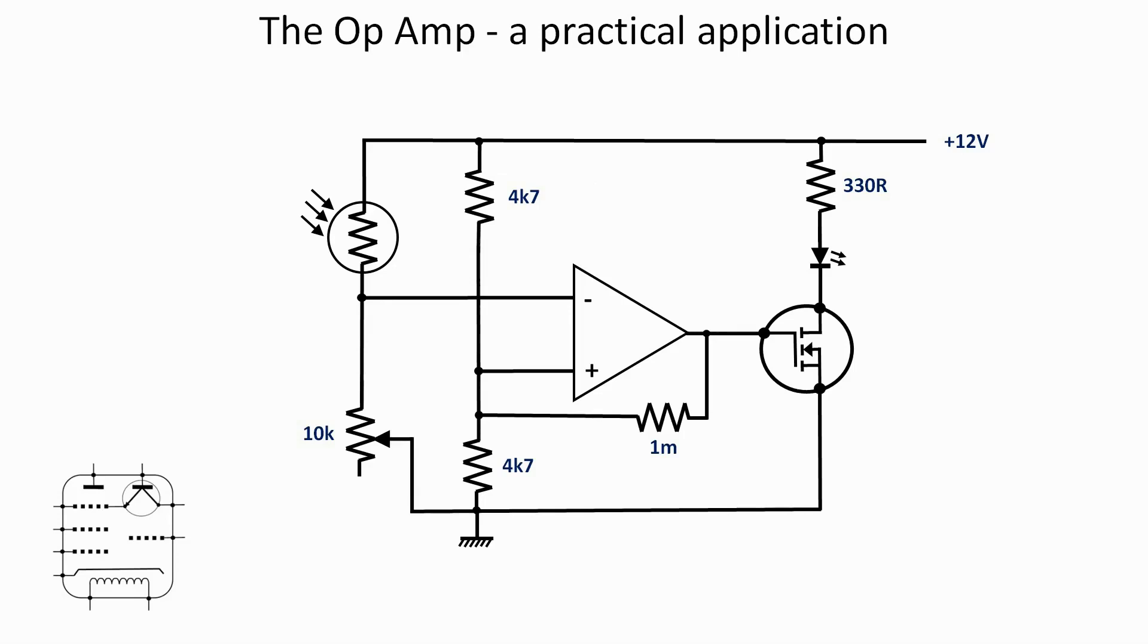Now the light-dependent resistor, if you point it at the daylight coming through the window, is about 500 ohms approximately. If I then cover it up so it's almost dark, it certainly goes up well above 12, 13k something like that. So there's quite a swing in resistance there from dark to light.